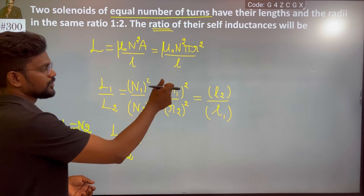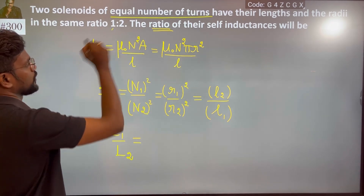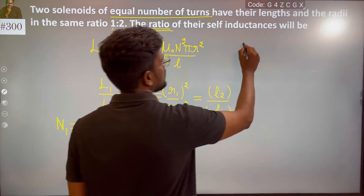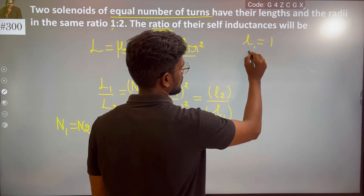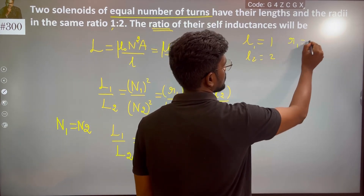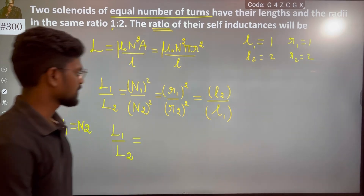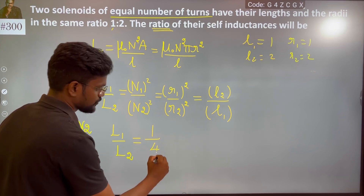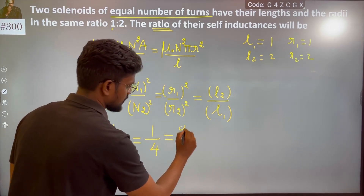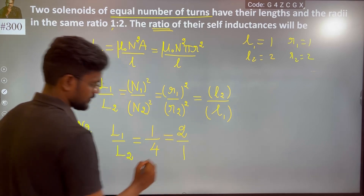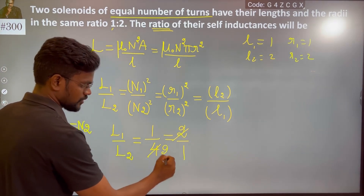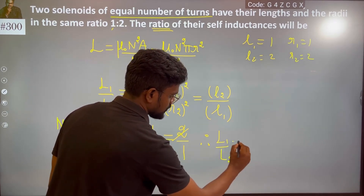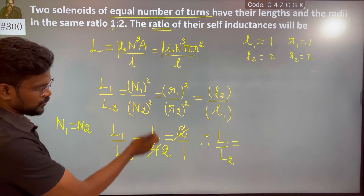Which is equal to: you have R1 and R2. R1 is 1, so length 1, length 2, R1 is 1, R2 is 2. R2 squared is 2 squared which is 4, which is equal to L2. L1 is 1, that becomes 2. So L1 by L2 is nothing but 1 by 2.